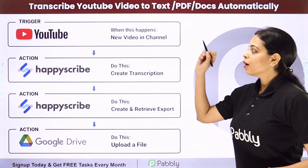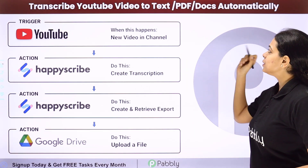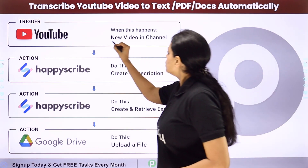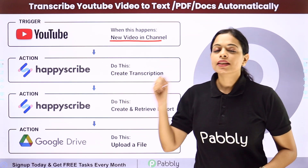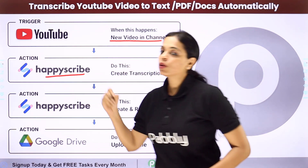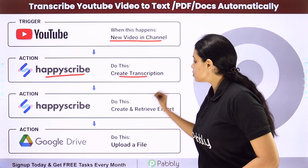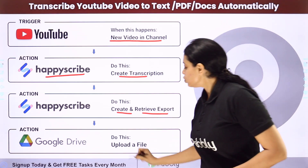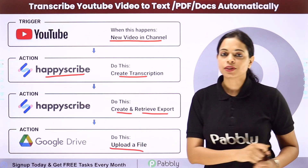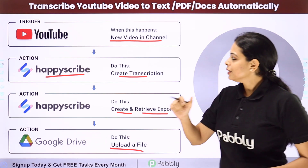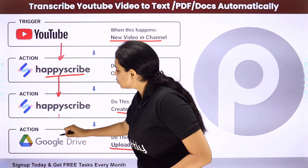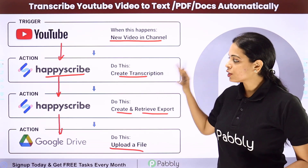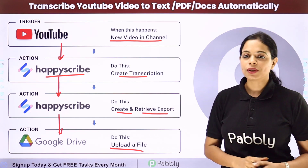In this video, we are going to understand how to transcribe YouTube video to text PDF docs automatically. Our objective is that every time a new video is uploaded in my YouTube channel, then automatically with the help of HappyScribe, I want to first create the transcription, then create and retrieve the export, and finally upload the file in my Google Drive. For this, I will be integrating these applications using Pabbly Connect. My trigger application will be YouTube, and my action applications will be HappyScribe and Google Drive.